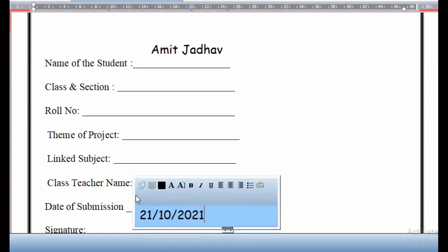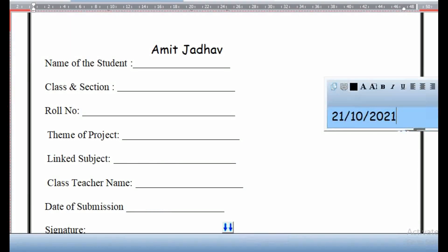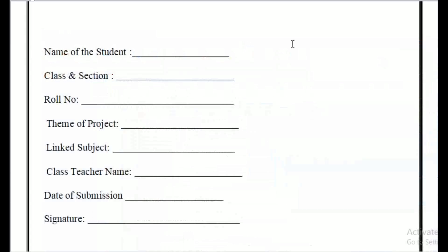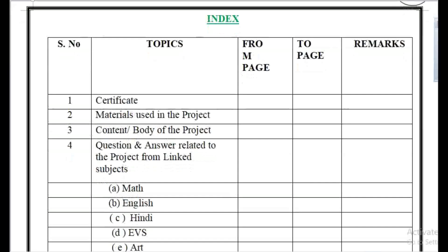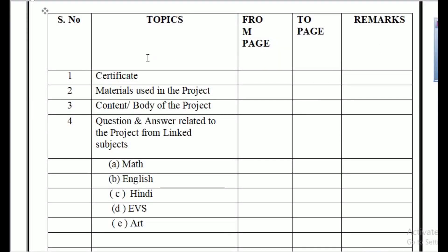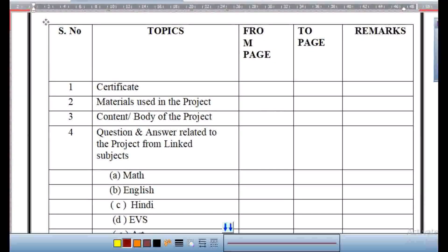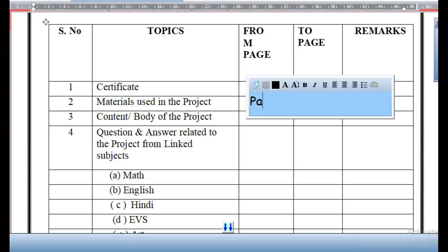Also add your signature on the title page. Then comes the second page, which is the index page. In the index, mention the page numbers for: the certificate, material used in the project, content or body of the project, and questions given in the project. The main thing to mention in the index is the page number for each section.